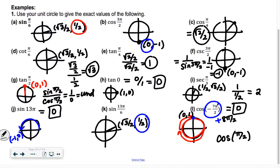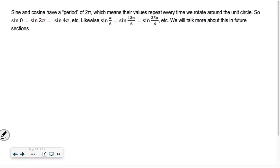So this last little bit talks about the period. It says sine and cosine have a period of 2π, which means their values repeat every time we rotate around the unit circle. So sine of π/6 is the same as 13π/6, which is the same as 5π/6. I can keep adding 12π/6, which is 2π. And sine of 0, sine of 2π, sine of 4π, sine of 6π, all of those are the same.